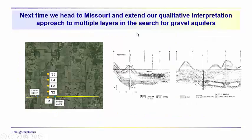So the next time we're going to take a look at a modeling exercise. We're not going to go through all of these soundings here, but we're going to be in an area of Missouri. And we'll extend our qualitative interpretation approach to multiple layers in the search of gravel aquifers. We'll use these qualitative interpretation methods that we've just kind of covered briefly to help us develop our starting model for inversion. So thanks for joining us and talk to you next time.